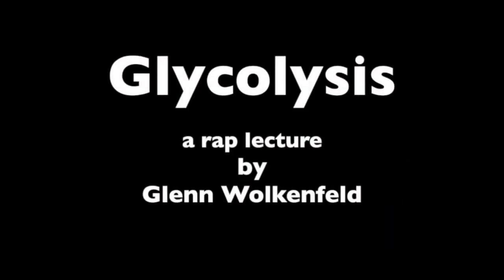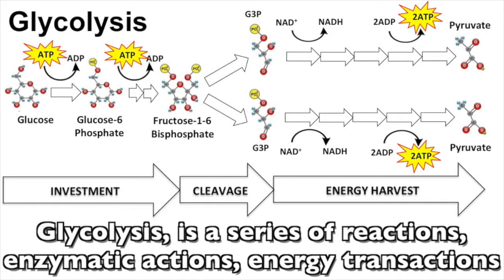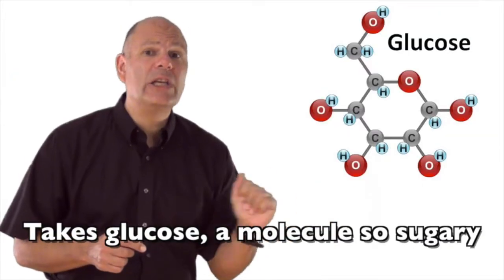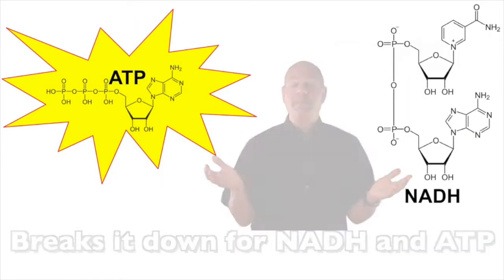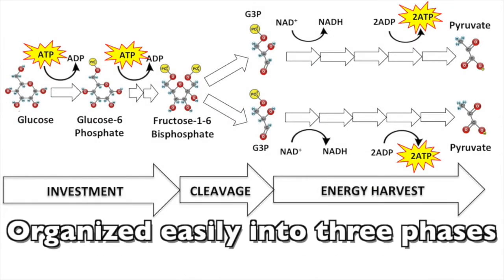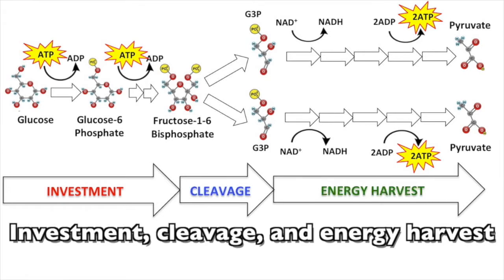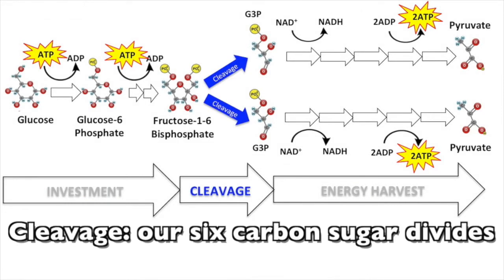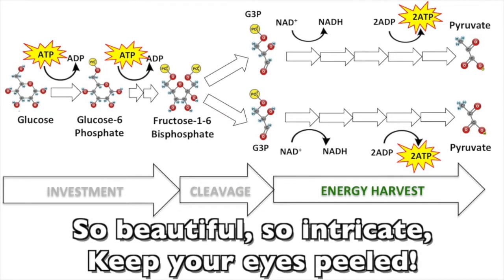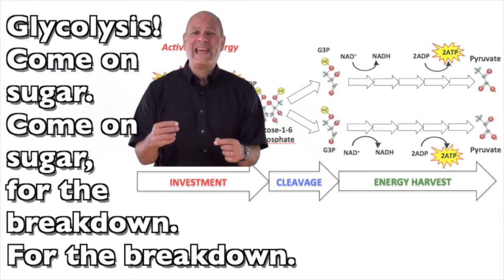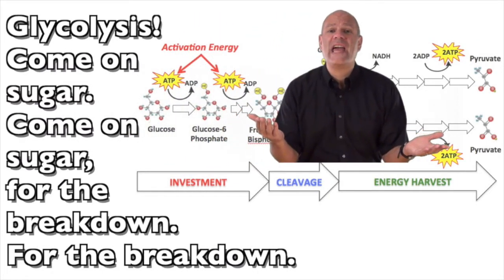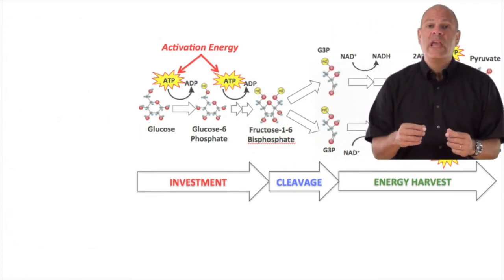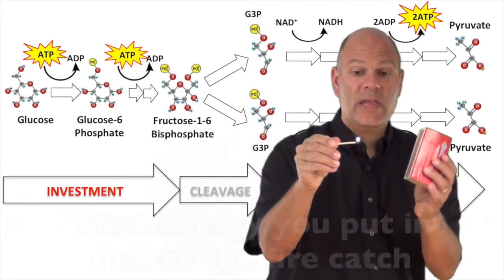Glycolysis Rap: Glycolysis is a series of reactions, enzymatic actions, energy transactions. Takes glucose, molecules of sugary, breaks it down for NADH and ATP. It's an anaerobic cytoplasmic pathway that amazes. Organized easily into three phases — investment, cleavage, and energy harvest. Investment: activation, energy supplied. Cleavage: our six-carbon sugar divides. Harvest: we get our energy yield. So beautiful, so intricate. Glycolysis — come on, sugar, for the breakdown. Investments like striking a match: that energy you put in makes the fire.